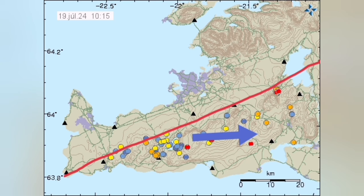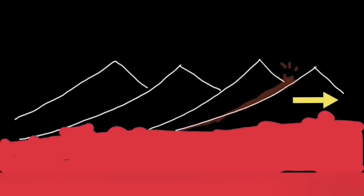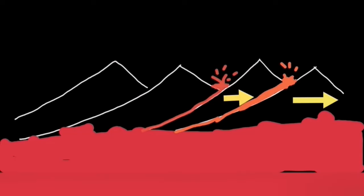As it moves and pulls, it practically rips the ground — the earth's crust — and creates what we call a rift. This rift is the location of these eruptions. Over time, as the rift moves and ripping progresses from one point to the next, eruptions happen in sequence from the first to the second to the third.